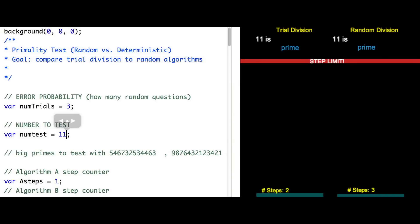And notice even with small input, if the input is prime, the random division algorithm will always output prime. But when the input is composite, we see the random division can make mistakes and identify incorrectly as prime.